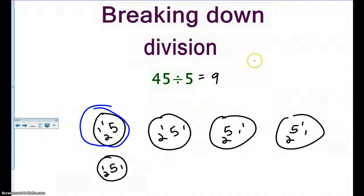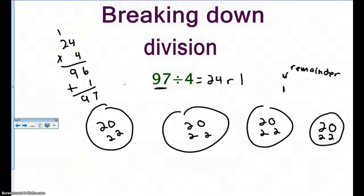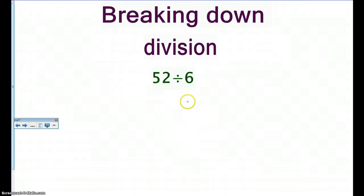Multiply your quotient by your divisor, and if you have a remainder you can add it. Let's go back one more and see if it works. Five times nine is forty-five — yes it is, and there is no remainder so I have nothing to add. Twenty-four times four is ninety-six, plus my remainder of one is ninety-seven. I'm good.